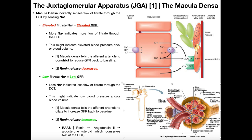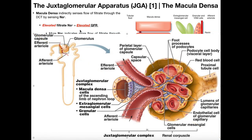Before we go any further, let's take a look at the entire nephron. Right here in the box we have the renal corpuscle, and of course the glomerular capillaries are inside that. All the contents of the box are blown up here, so we can see the capsule, the glomerular capillaries, the afferent arteriole feeding these capillaries, and then the efferent arteriole draining them.